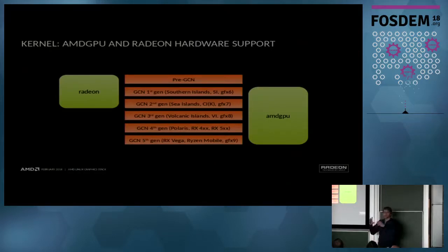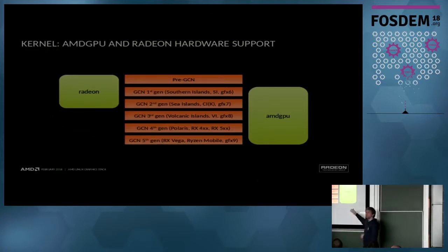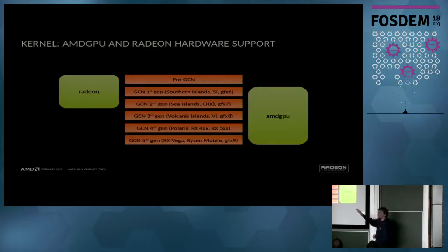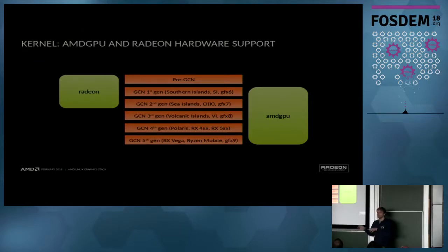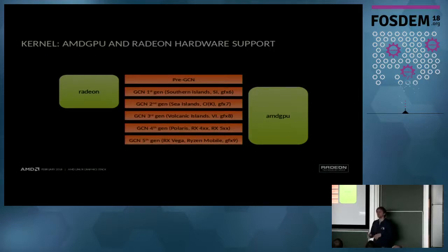A brief overview of the Radeon vs AMD GPU situation: the Radeon kernel module is the one that was always there, but about five years ago there was a decision internally at AMD to do Linux right and to do open source right. Part of this decision was to say, well, back then there was this thing called FGLRX — the closed-source driver — we don't want that anymore. We want to have one single kernel module which works with all our drivers, and that is basically how the AMD GPU kernel module got started.